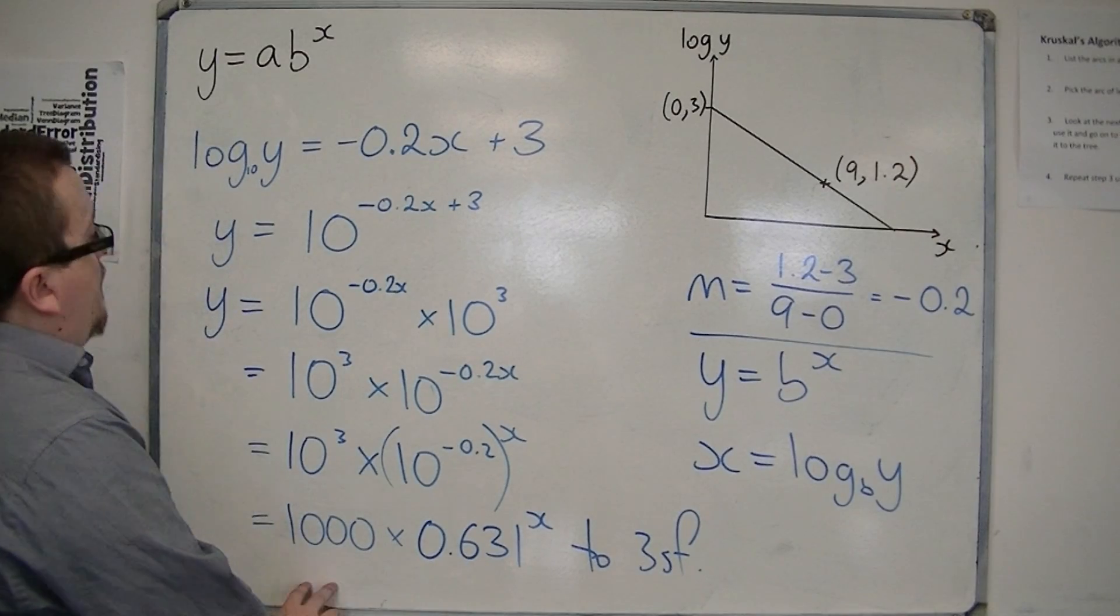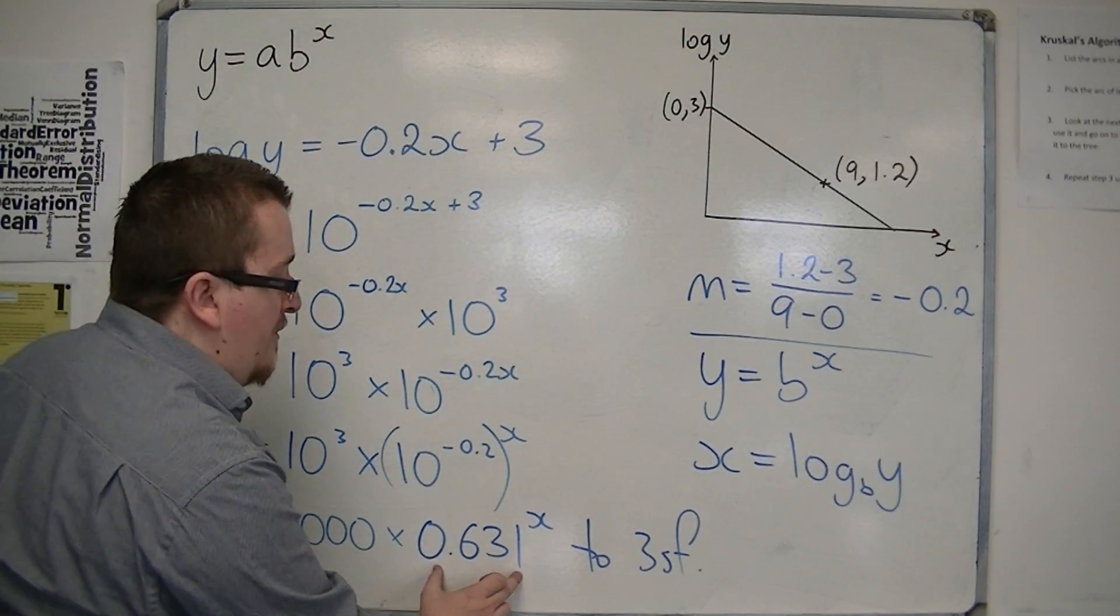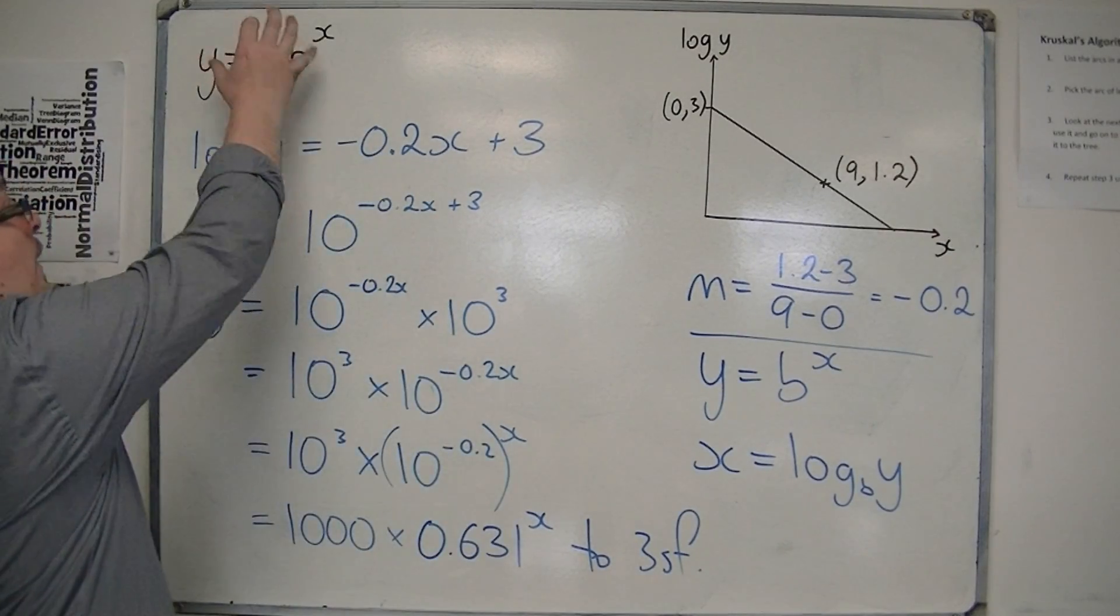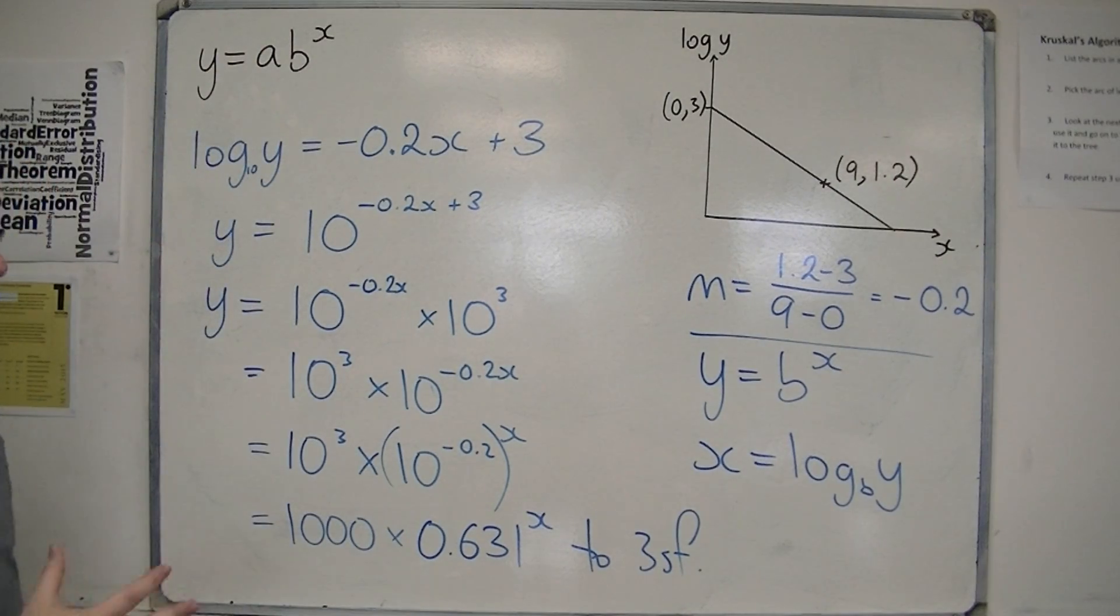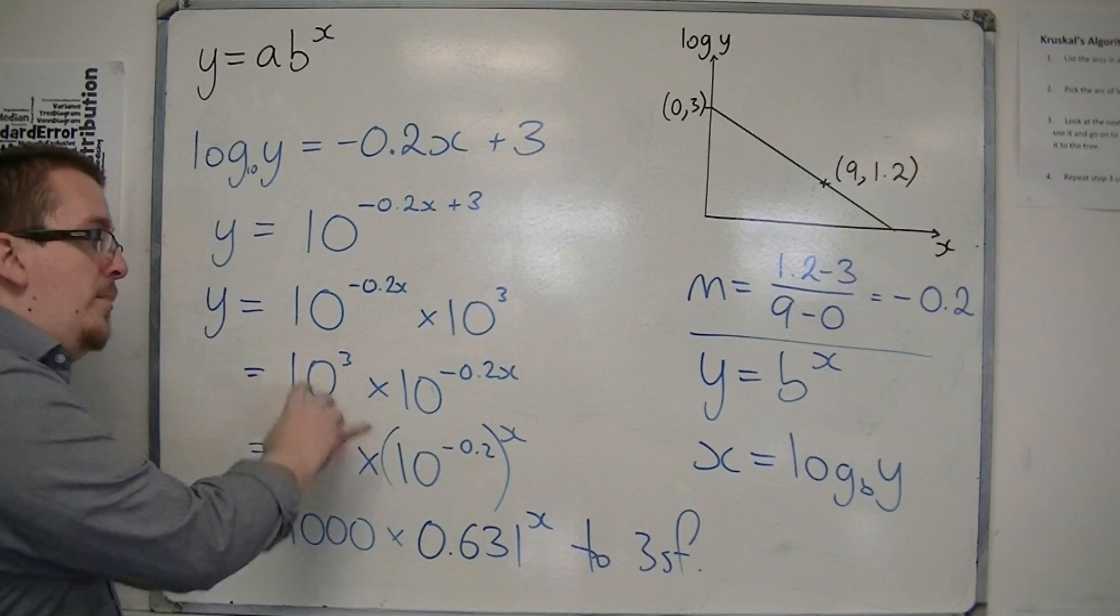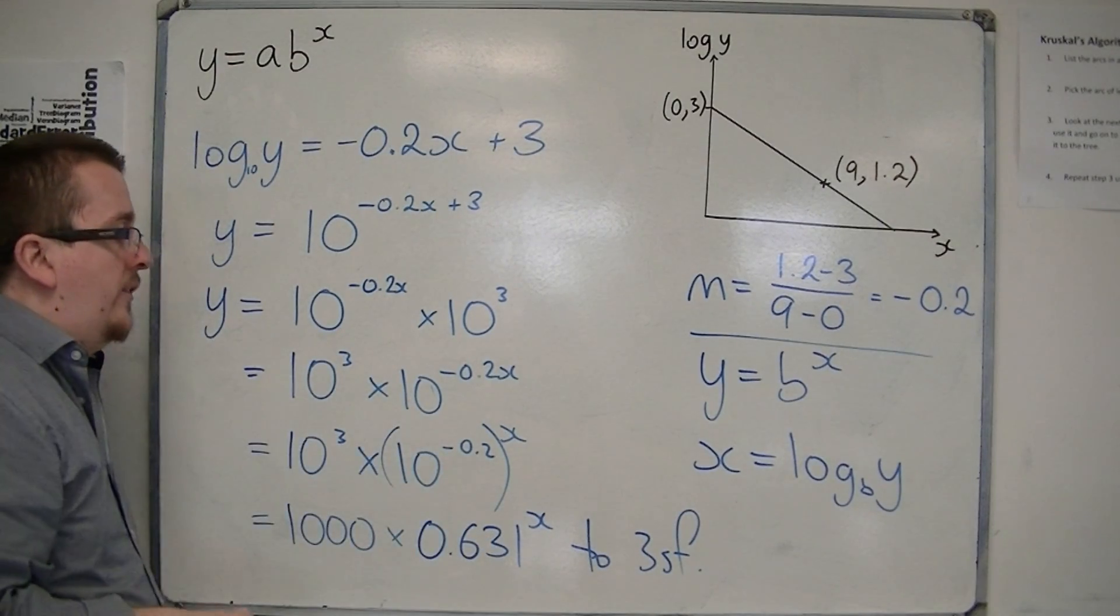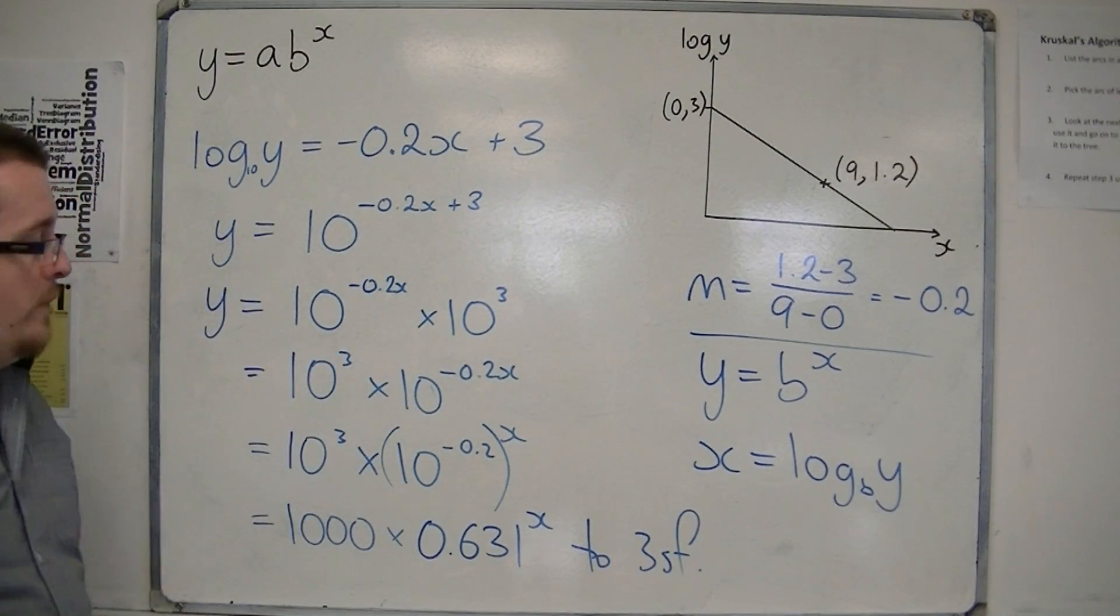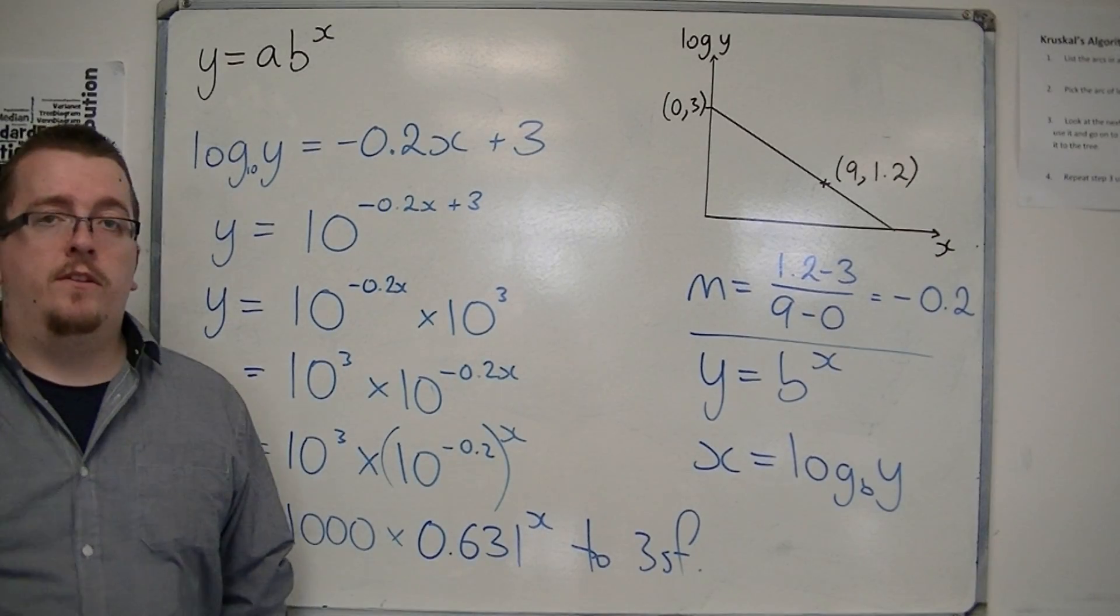So this is my value of a, this is my value of b, and I now have it in the form of y equals a, b to the x, as was required. So it takes a little bit of manipulation using your index laws and reverse engineering it, but we can get there in the end quite easily.